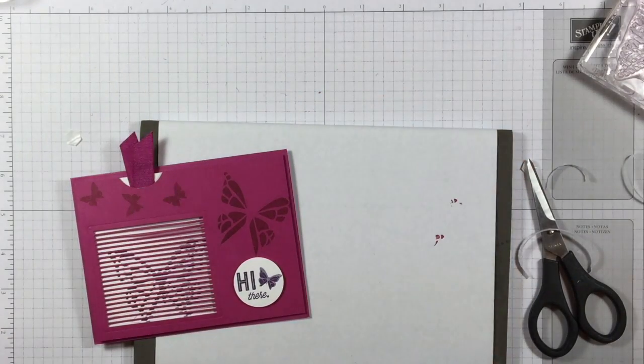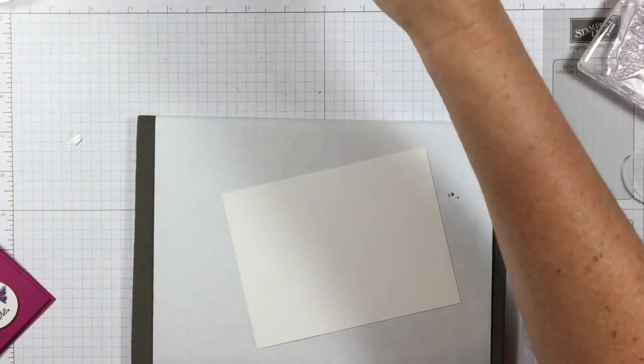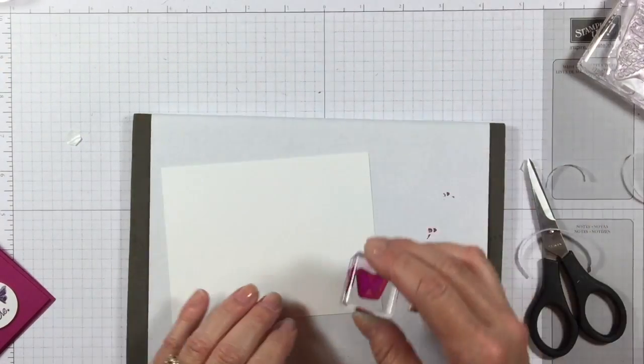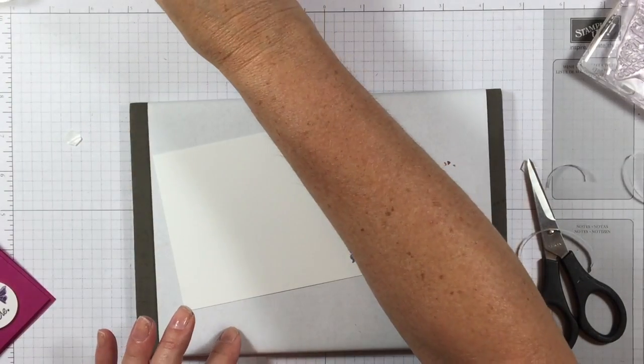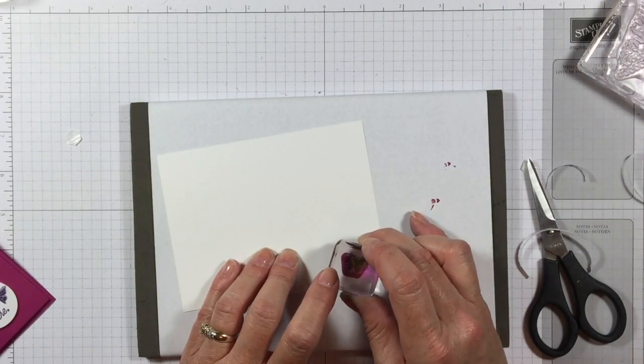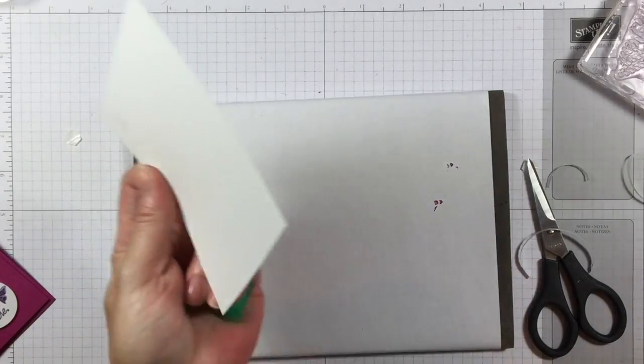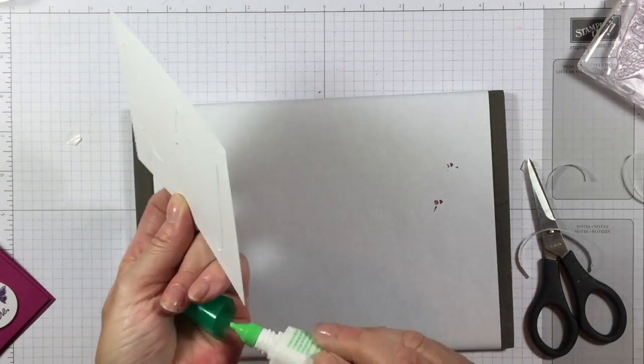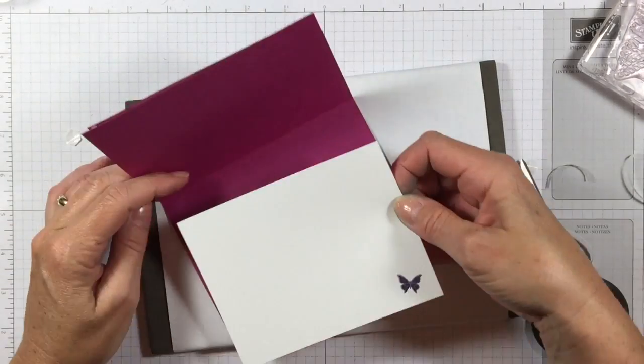Last but not least, we need to do a little bit of work here. I've got my Wisteria Wonder and I'm just going to stamp a little butterfly in the corner, and Elegant Eggplant for the detailed layer. This goes inside my card.